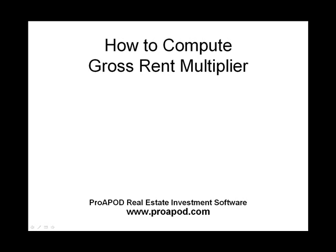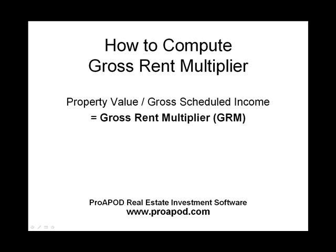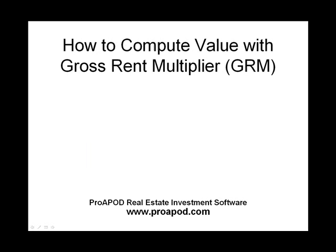Gross rent multiplier is the ratio between property value and gross scheduled income. To compute it, you divide a property's value by the gross scheduled income it generates. For example, if a property is selling for $700,000 and generates $96,000 in gross scheduled income, you divide the value by that income to determine its GRM, which in this case is 7.29.